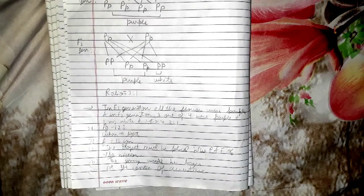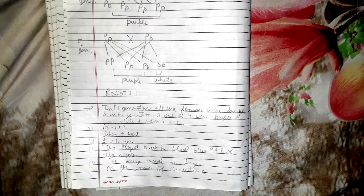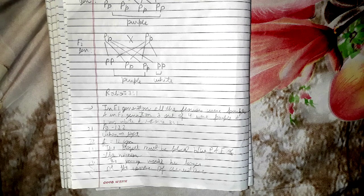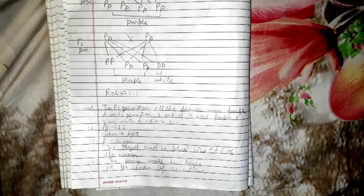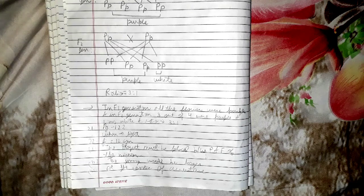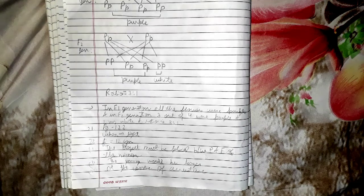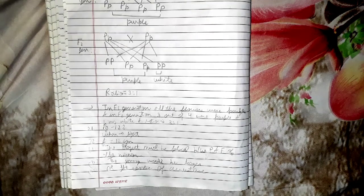Question 21: give reasons for the bending of the shoot tip of a plant towards the light source coming from one side of the plant. Very straightforward question. It is on page number 122.